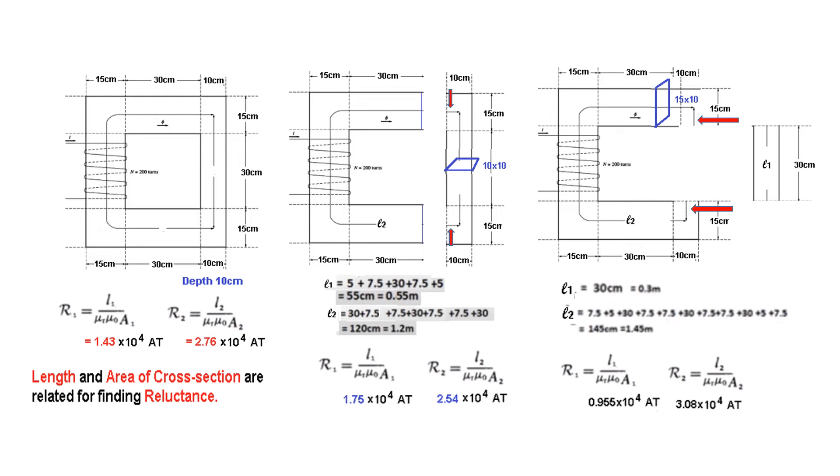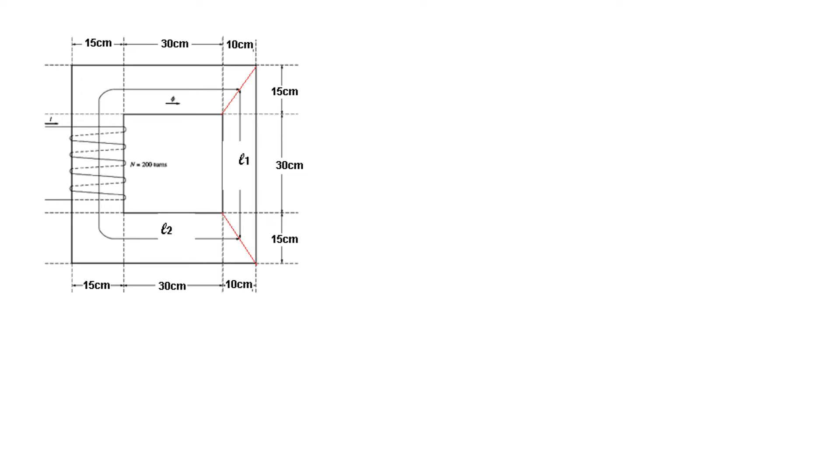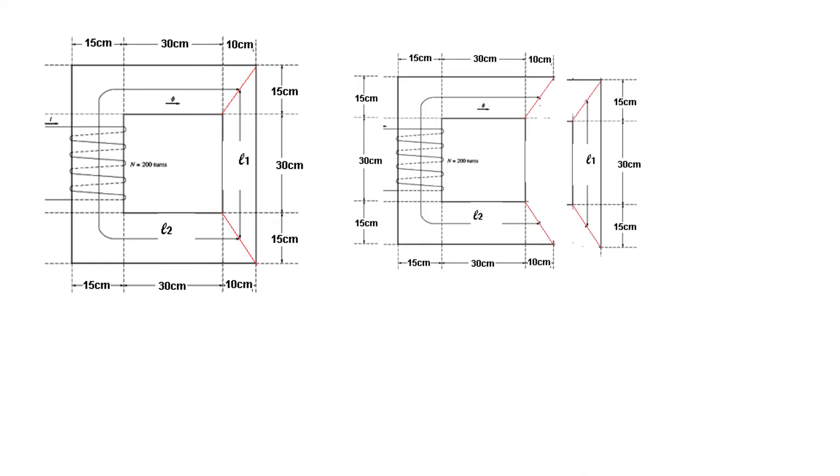So the net result is that when we solve, we have to draw a diagonal here and draw a diagonal here. And if you like, you can separate the two like this. And now this is L1, and from here all the way, this is L2. And now you can easily calculate L1. So L1 starting from here half of 15, so 7.5, then 30, and half of 15, 7.5. So L1 is 45 centimeter.